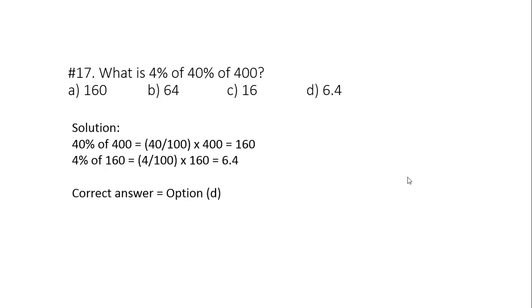Question number 17. What is 4 percent of 40 percent of 400? It's an easy question. First we will find 40 percent of 400. So 40 percent of 400 is 160. Then we will find 4 percent of 160. So 4 percent of 160 will be 6.4. So correct answer option is option D.